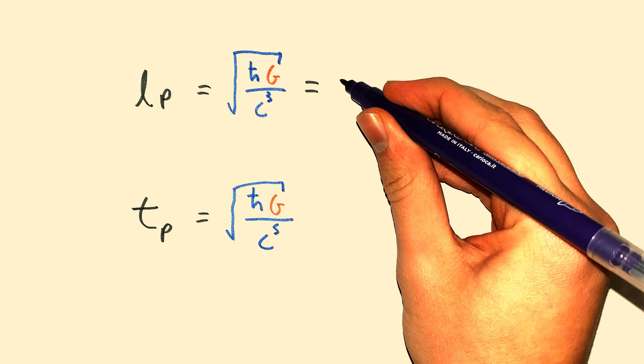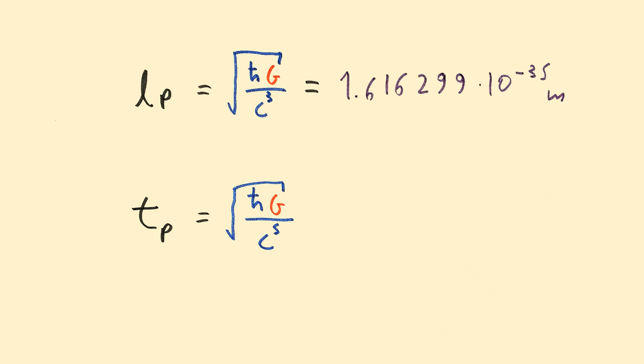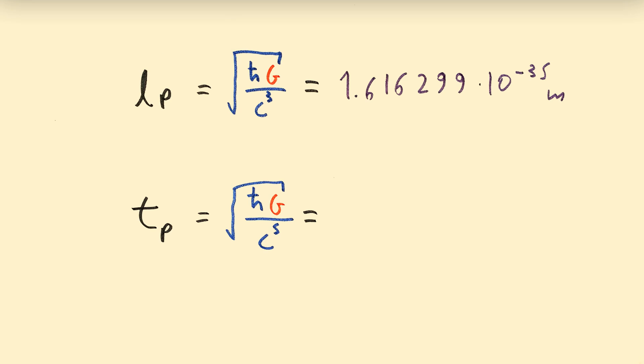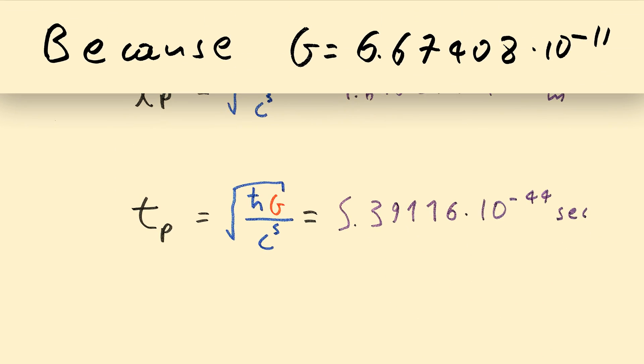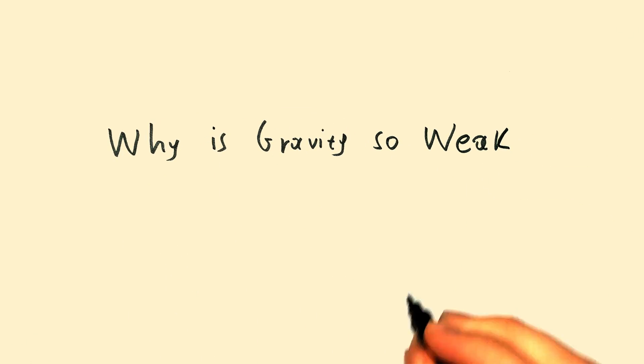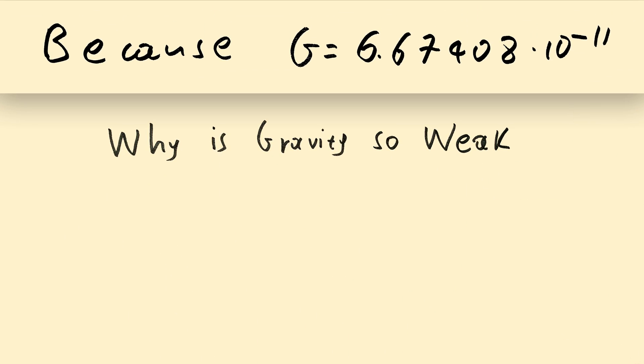So why is this the smallest distance possible? Partly because G's value is this. Why is this the shortest time possible? Partly because G's value is this. Why is gravity so weak? Partly because G's value is this. Why is G's value this? We don't know.